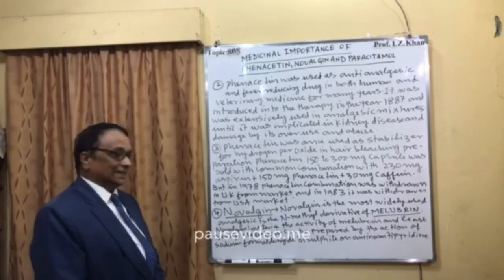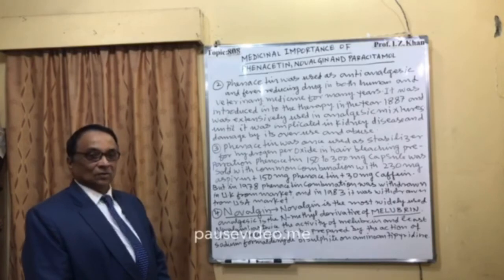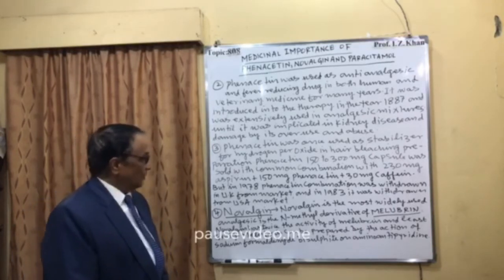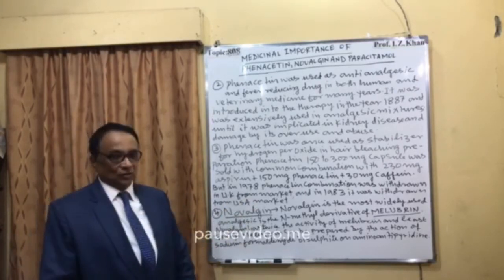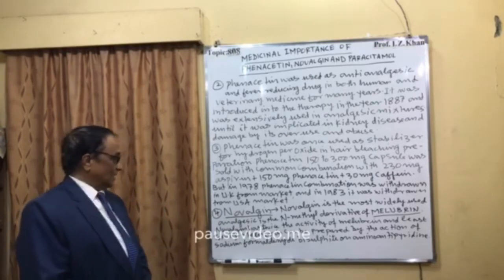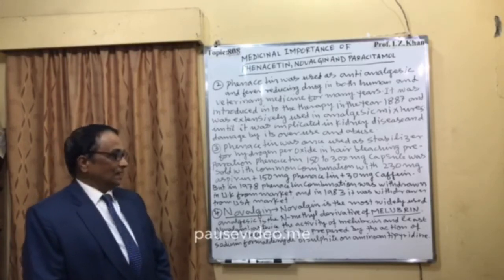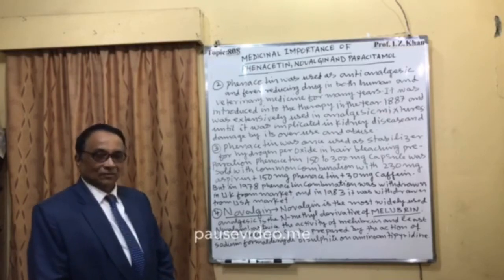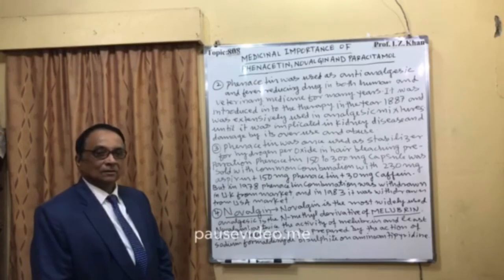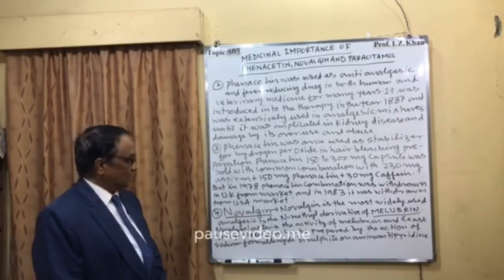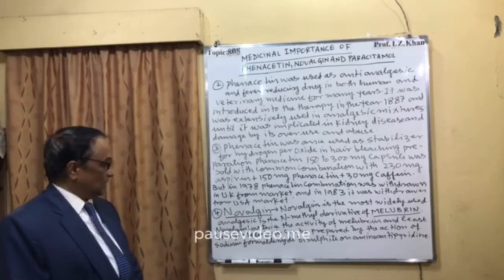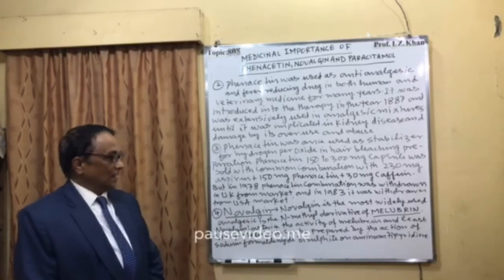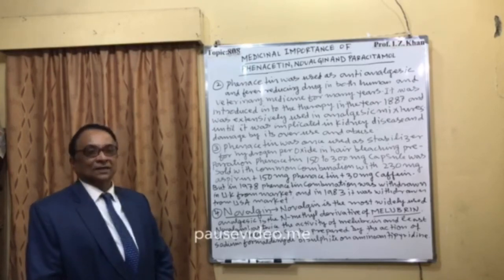Novalgene is still in use and is a very good mild analgesic — in fact, the most widely used analgesic. It is the N-methyl derivative of melubrine. Melubrine is also a very good analgesic, but once melubrine is treated with sodium formaldehyde bisulfide, amino-antipyrin is converted into Novalgene. Novalgene has twice the activity of melubrine and least toxicity.